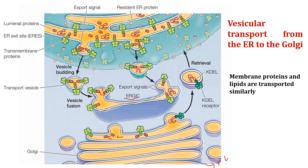Most luminal proteins exported from the ER are released into the ER-Golgi intermediate compartment. However, not only newly synthesized luminal proteins but also resident ER proteins such as BIP and disulfide isomerase — which function within the ER — are also transported out of the ER through vesicle budding via the ERGIC.